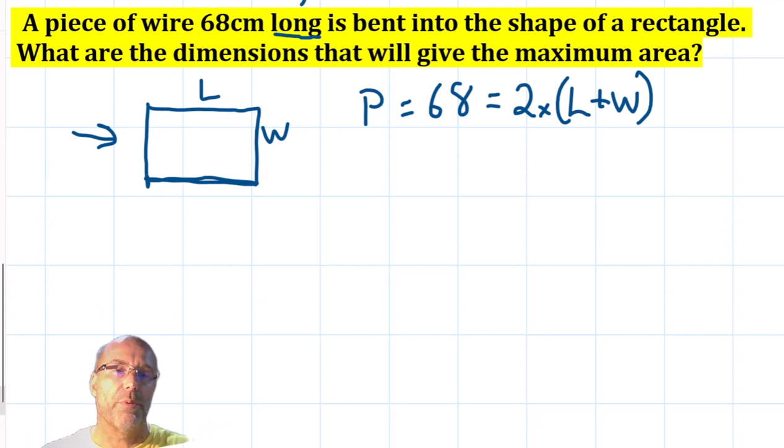P for perimeter, that's given as 68 from the previous step there. We know the perimeter is two lots of length plus width, and we can reduce that down and we can divide both sides by 2, so length plus width is 34. Now if students have done simultaneous equations, perhaps they might apply substitution, but not all students will do that of course. It depends on the context of the class.